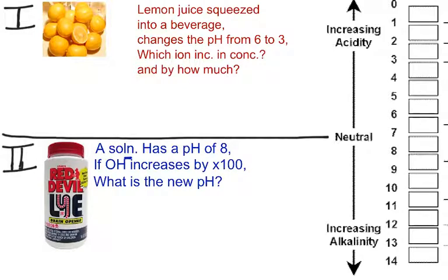We have two examples here. Lemon juice squeezed into a beverage changes from a pH of 6 to a pH of 3. Which ion increased in concentration and by how much? A solution has a pH of 8. If the OH- increases by times 100, what is the new pH? Which is your typical quiz and test questions. So, you're going to pause the video for a second and we'll see how we do.